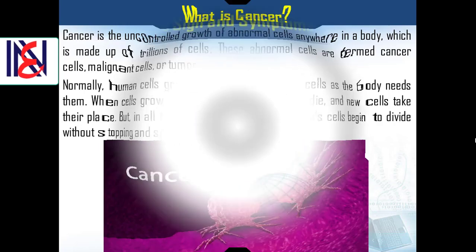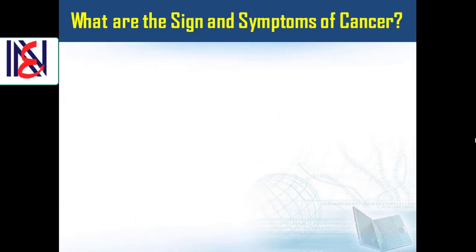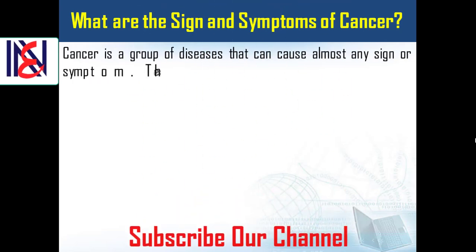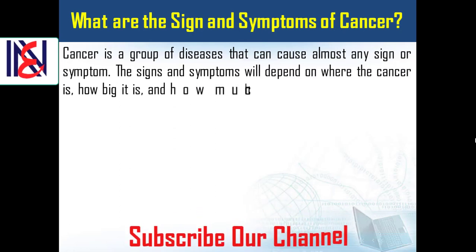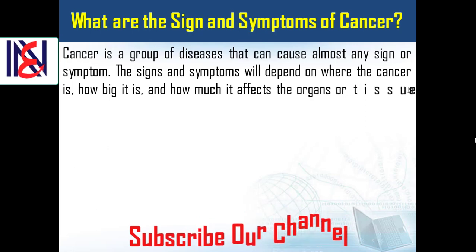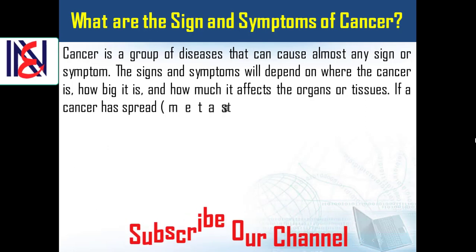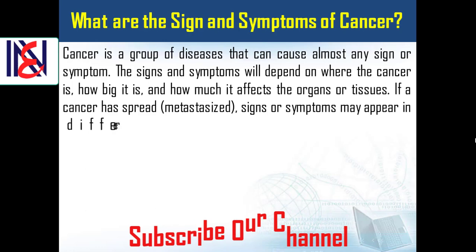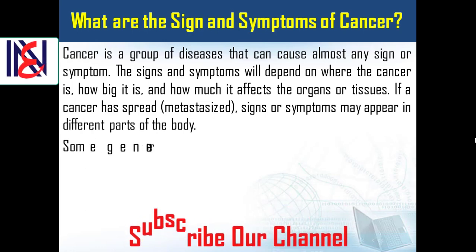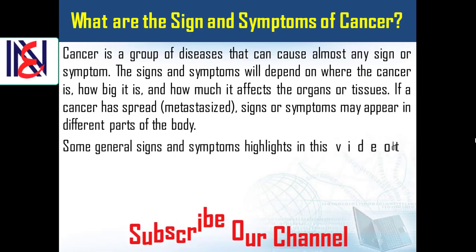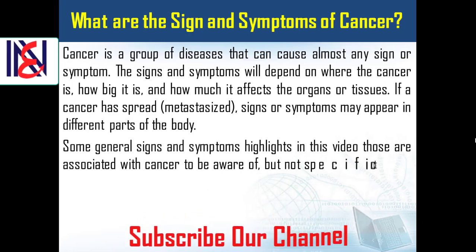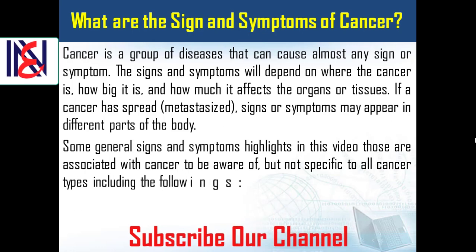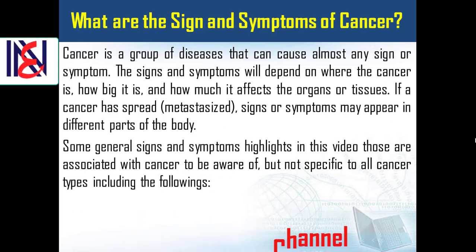What are the signs and symptoms of cancer? Cancer is a group of diseases that can cause almost any sign or symptom. The signs and symptoms will depend on where the cancer is, how big it is, and how much it affects the organs or tissues. If a cancer has spread — metastasized — signs or symptoms may appear in different parts of the body. Some general signs and symptoms associated with cancer to be aware of, but not specific to all cancer types, include the following.